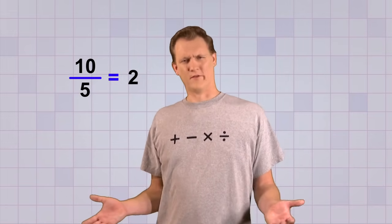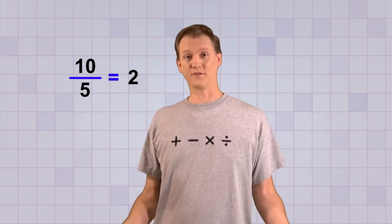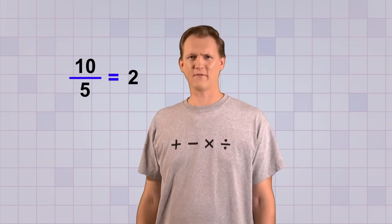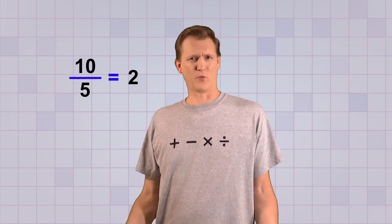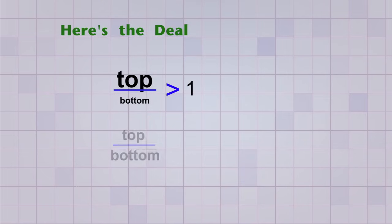So what's the deal? The value 2 doesn't seem like a smaller part of something — it seems like 2 of something. Aren't fractions supposed to have a value smaller than 1? Here's the deal: if the top number of a fraction is bigger than the bottom number, then the value of the fraction will be greater than 1. But if the top number is smaller than the bottom number, then the value of the fraction will be smaller than 1.